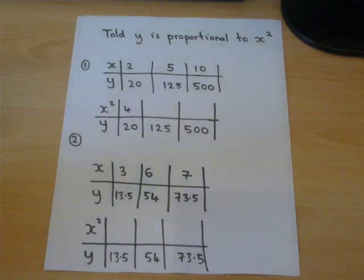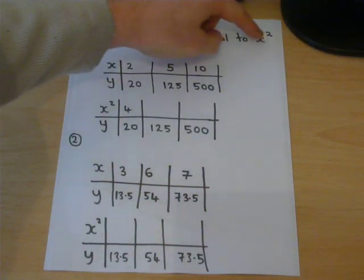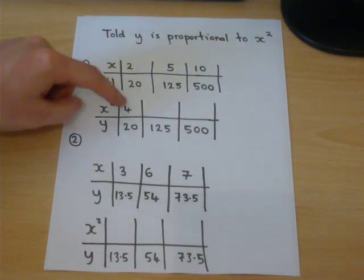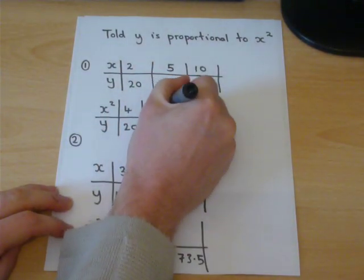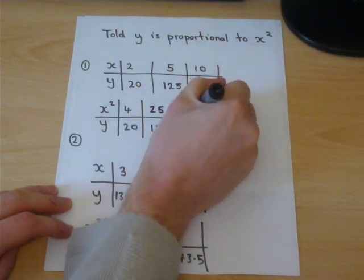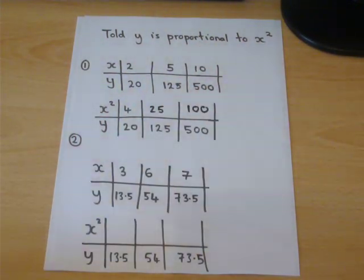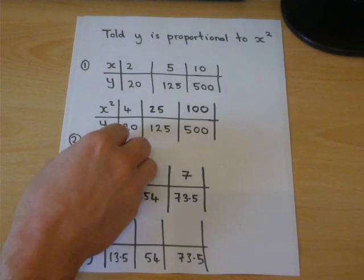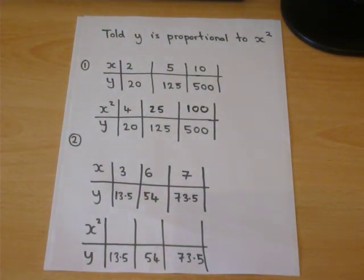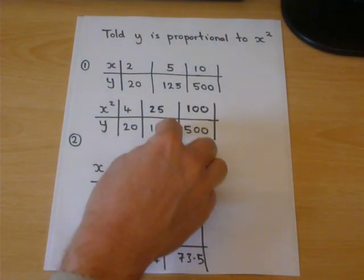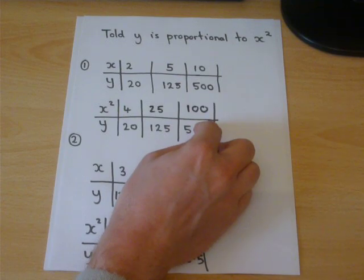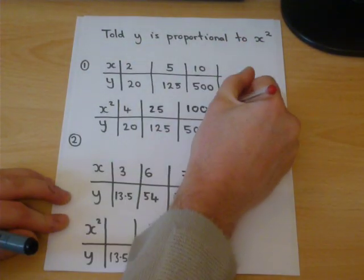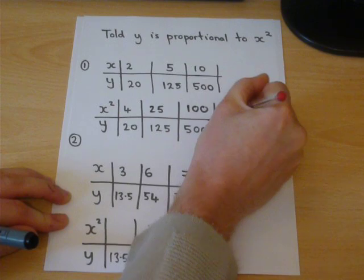But if we work out x squared, so 2 squared is 4, 5 squared is 25, 10 squared is 100. That is where the pattern lies. If you do 20 divided by 4, you get 5. 125 divided by 25, 5. 500 over 100, 5. The pattern is times by 5.